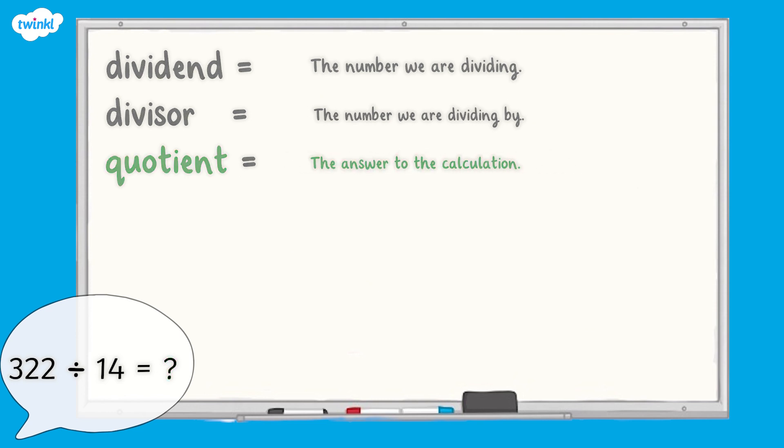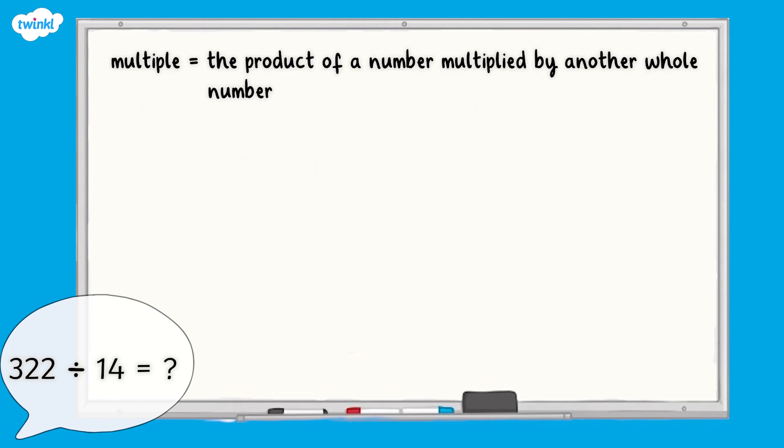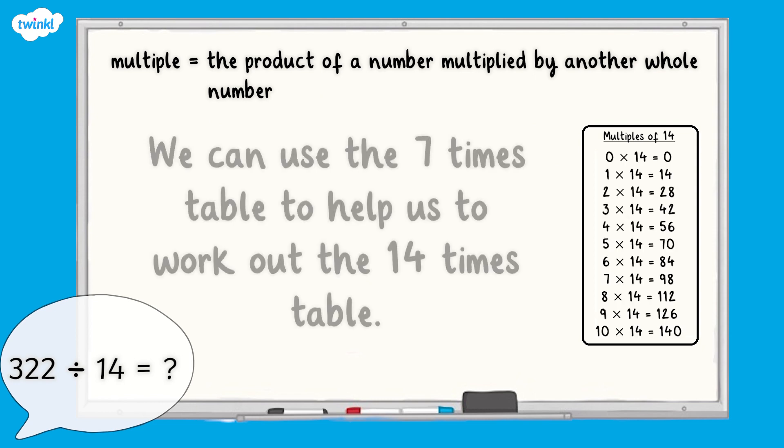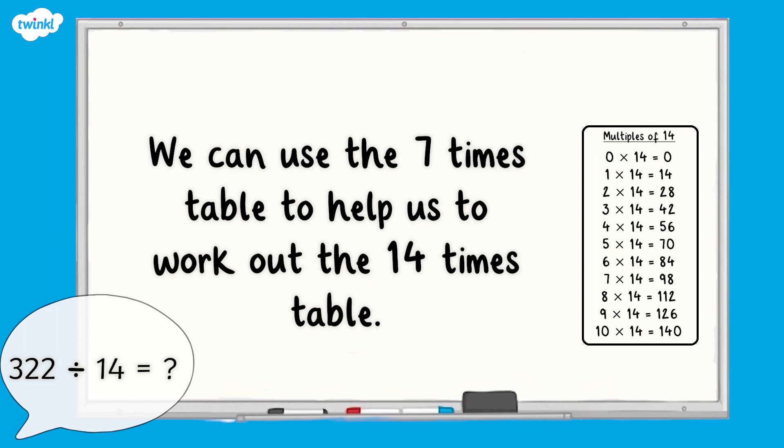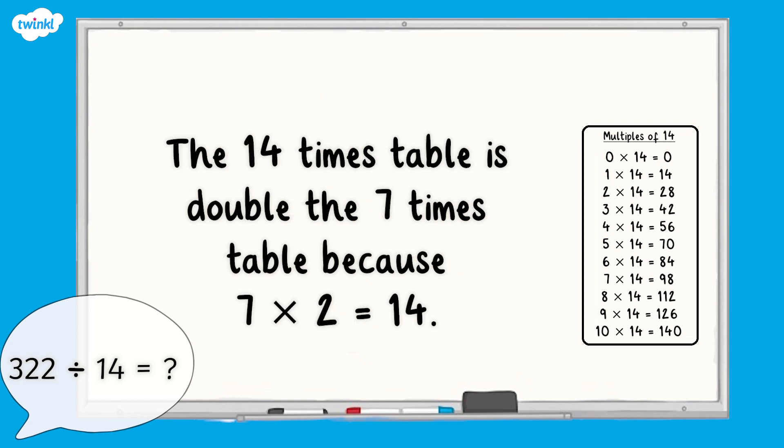When we divide by a two-digit number, it's a good idea to list the first 10 multiples of our divisor first so we have these facts to hand. Here are the first multiples of 14 up to 10 times 14. To do this, think about the times tables and math knowledge that could help you. In this case, the seven times table is really useful because if you double seven you get 14. So the 14 times table is double the seven times table. These multiples of 14 will be really useful when completing our division calculation.